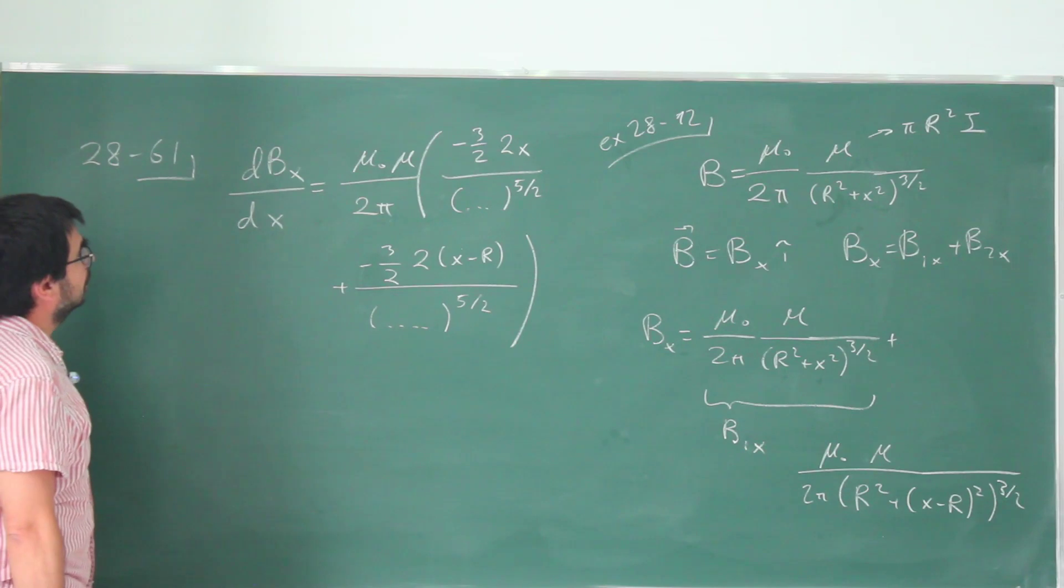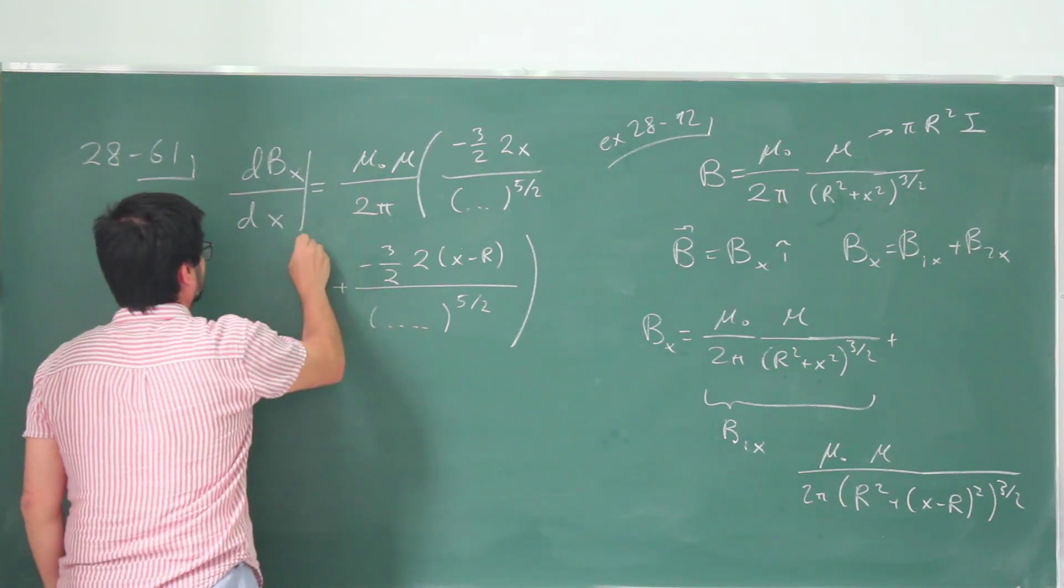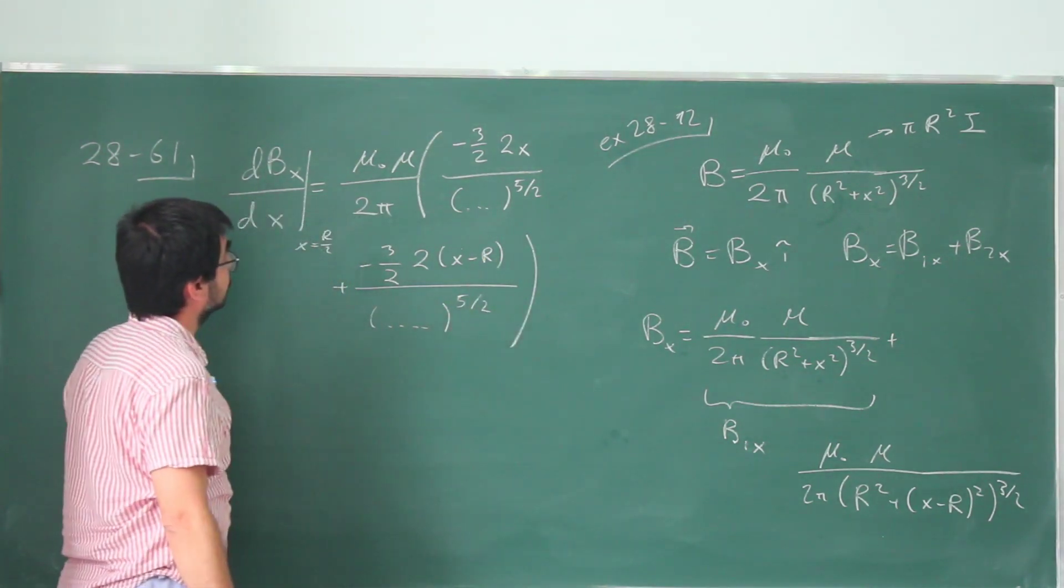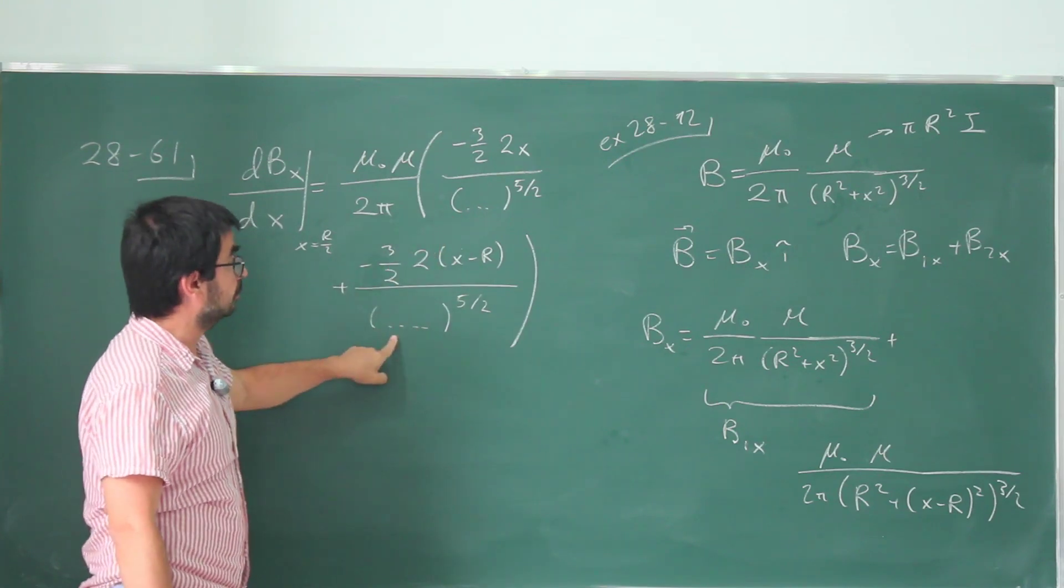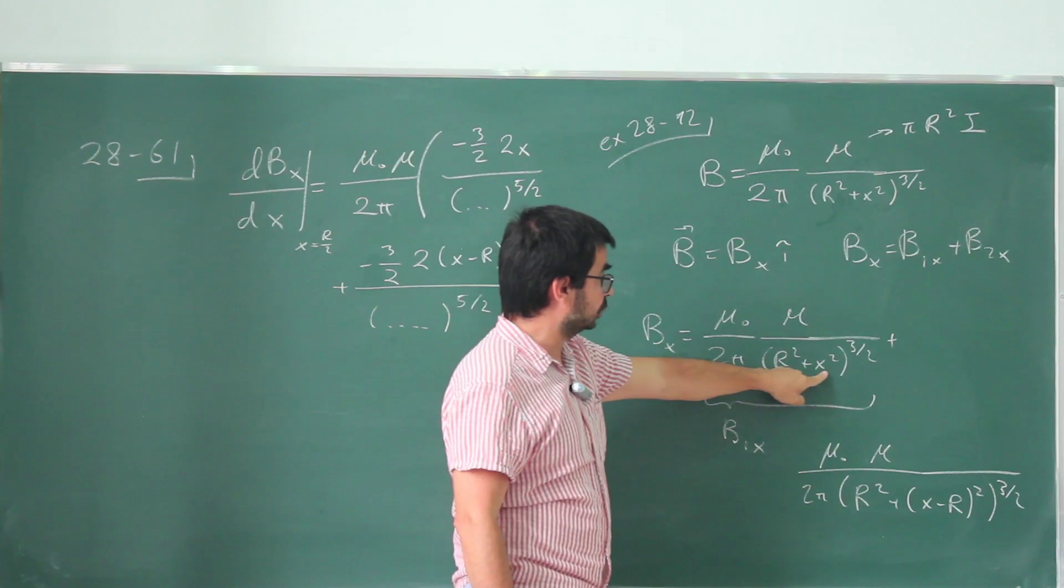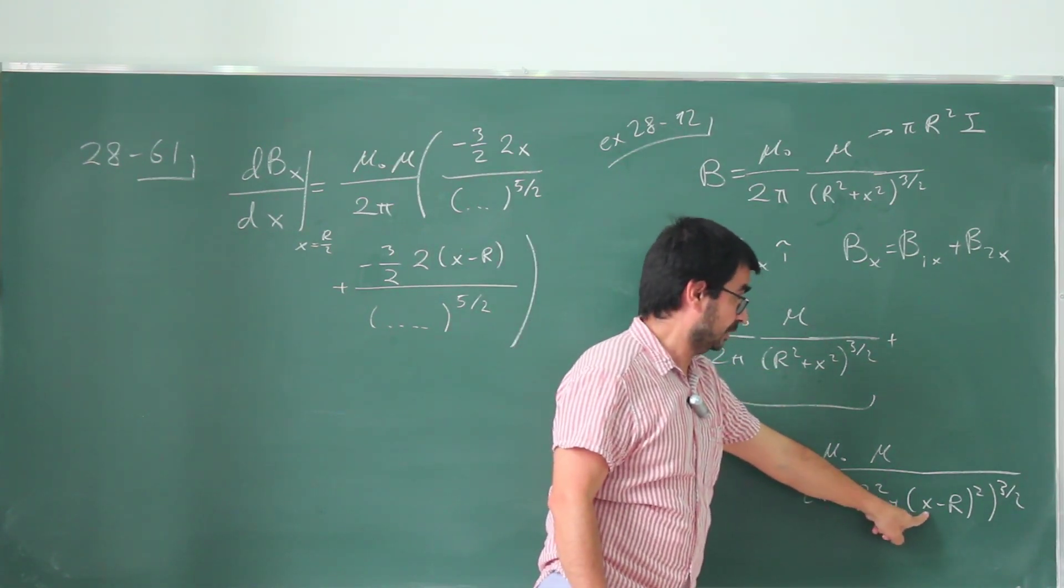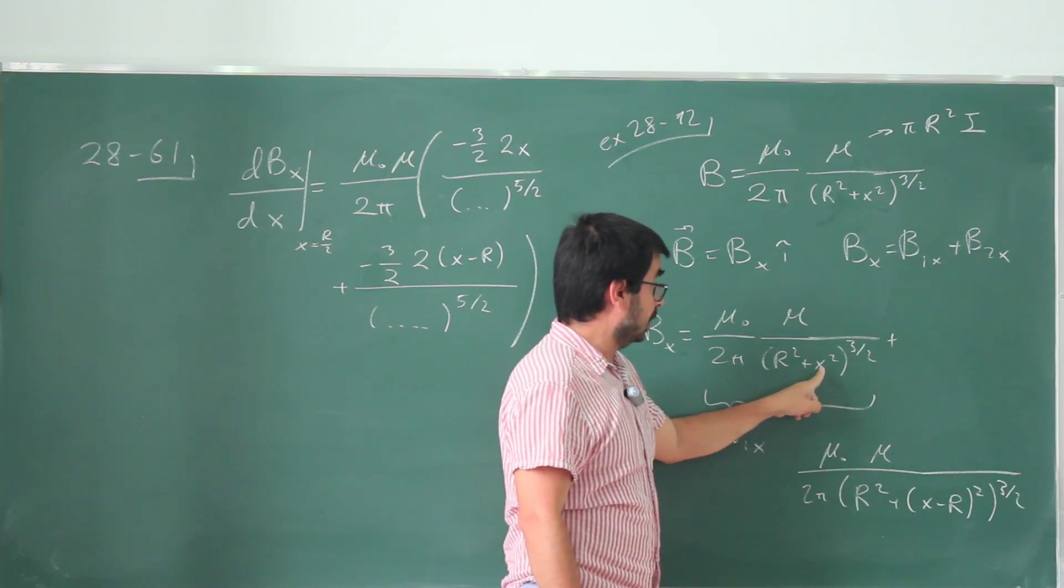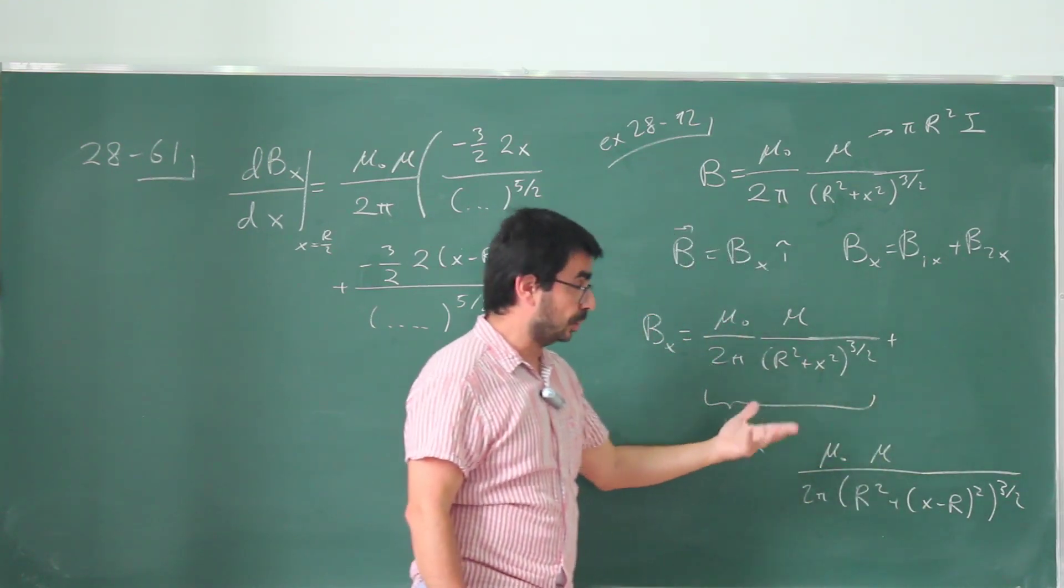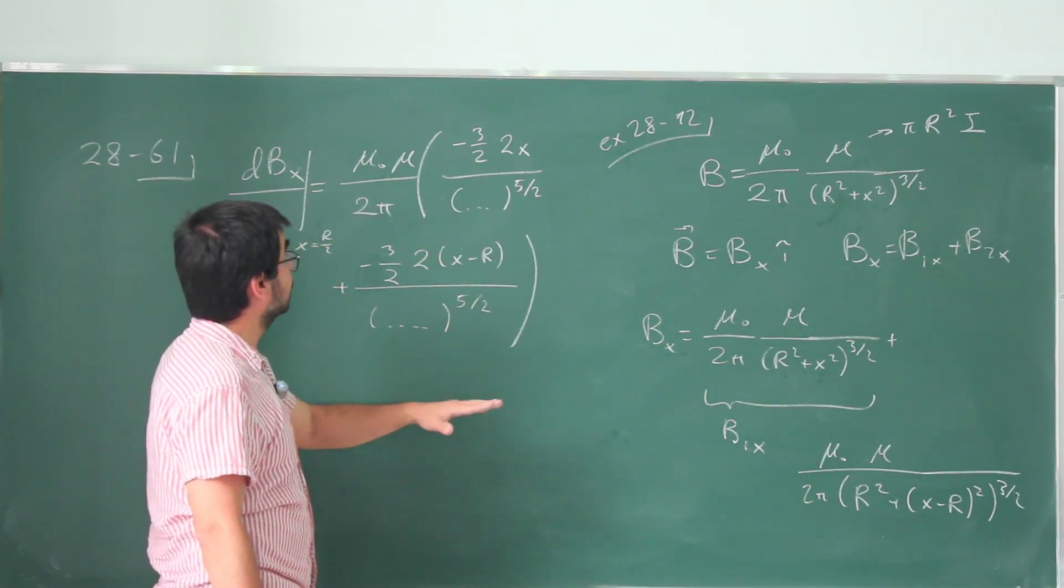Now what happens if I substitute x equals R over 2. I evaluate everything at x equals R over 2. Now the denominators become identical. Because R square plus x square is the same as R square plus, well, R square plus R over 2 square and R square plus minus R over 2 square. And square of minus R over 2 is, of course, the same as square of R over 2. So the denominators remain the same.